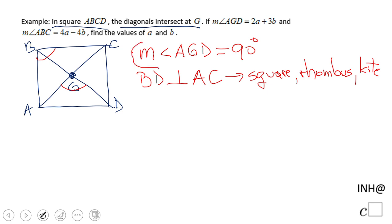What about angle ABC? The measure of angle ABC is also 90 degrees because that is the definition of a square. So now we have two equations.